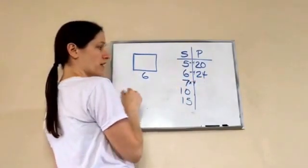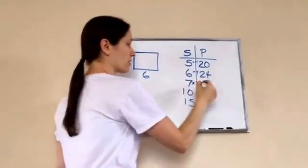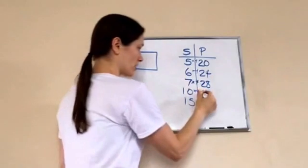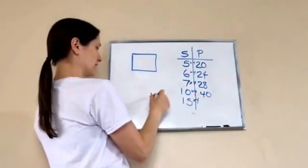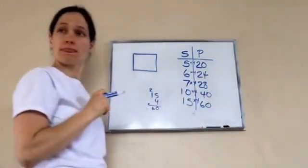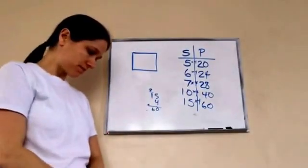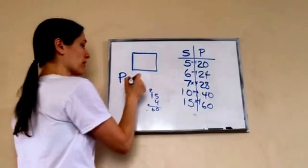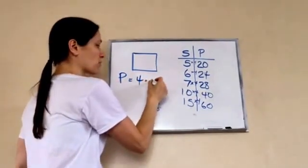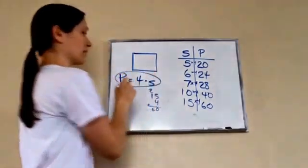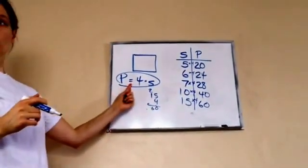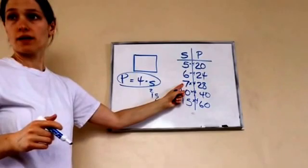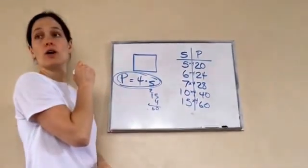So if this was 7, then what would the perimeter be? 28. Good job. And if this was 10? 40. Good job. And if this was 15 — 15 times 4 is 60. You understand how we figured out that function? So basically, P, the perimeter, equals 4 times whatever our S was. This is the formula — perimeter equals 4 times the side.